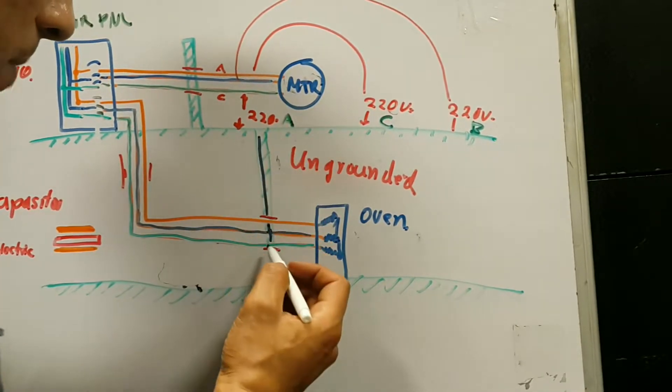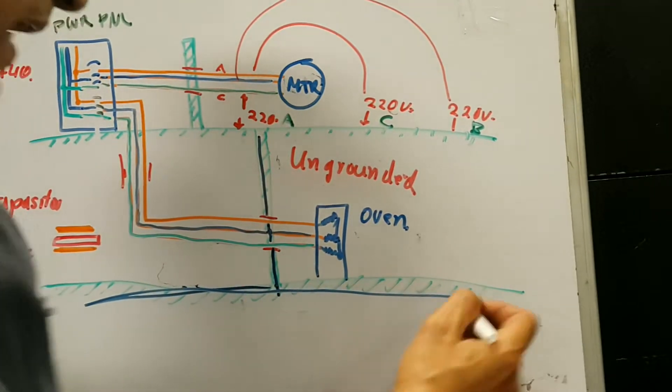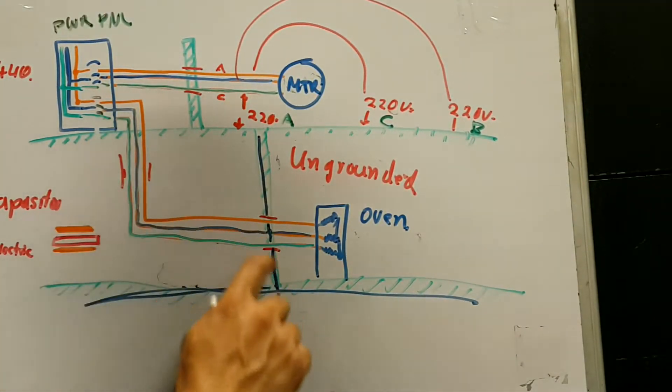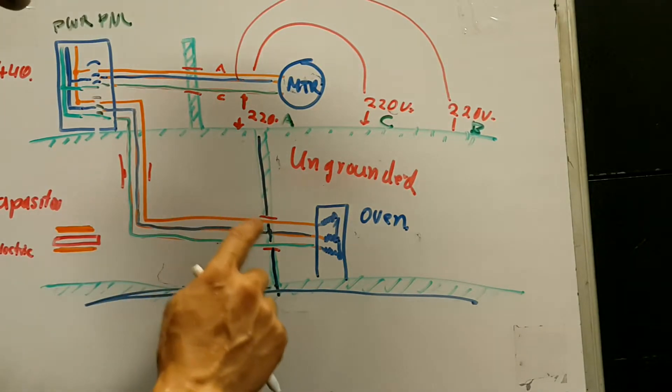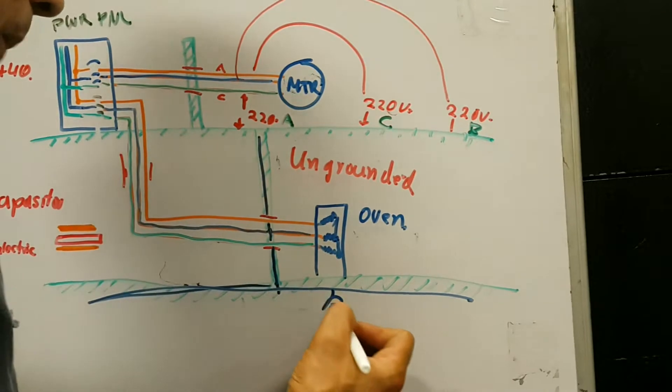So notice how I put the blue of the B phase in the ship. So now, the ship, because of this ground over here, is at Bravo potential. What that means is that these voltages in here now change.